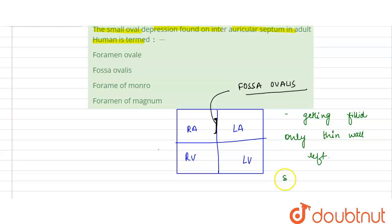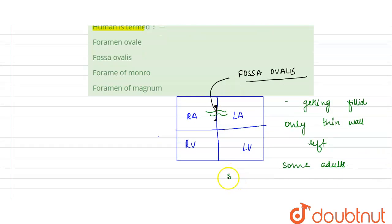Only thin wall is left, which is filled after the birth. But in case of some adults, it is not filled and it remains.